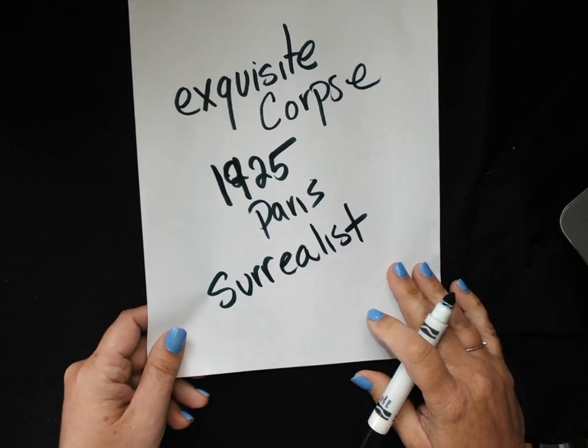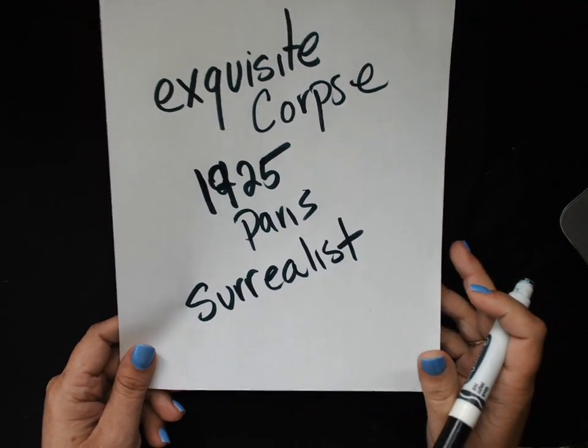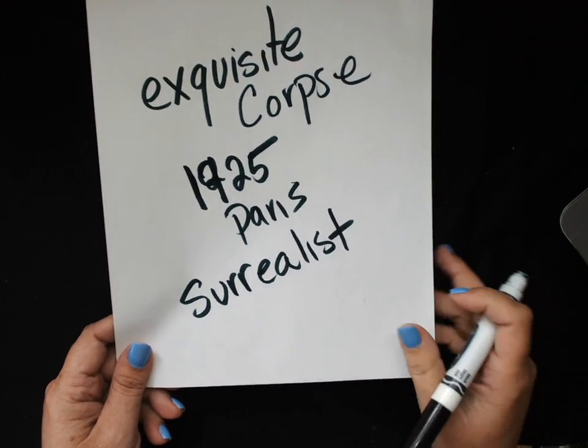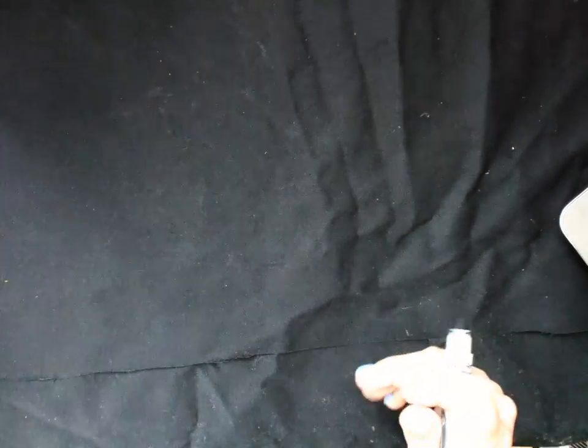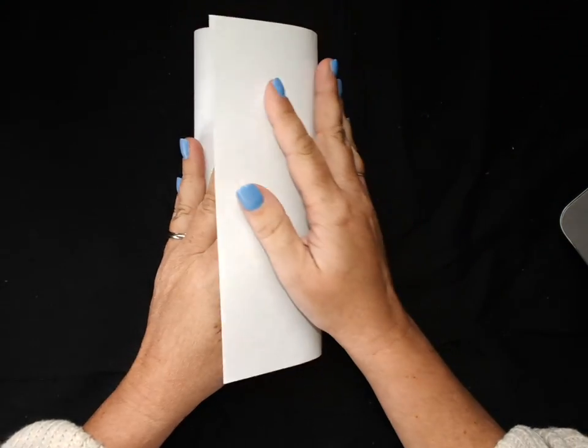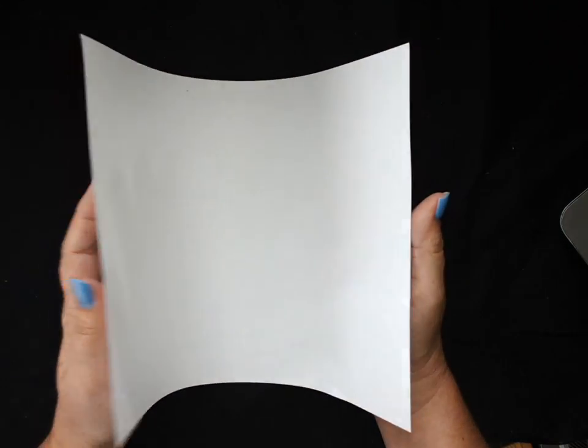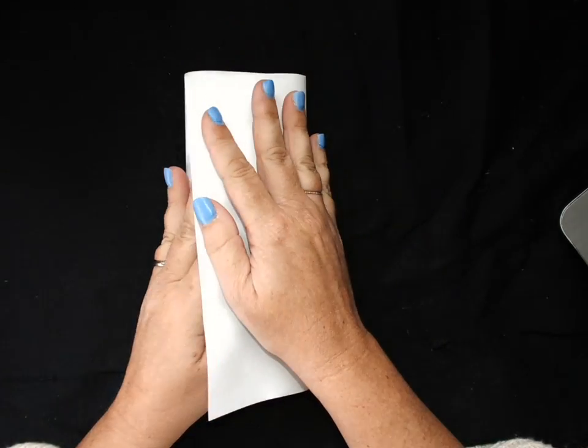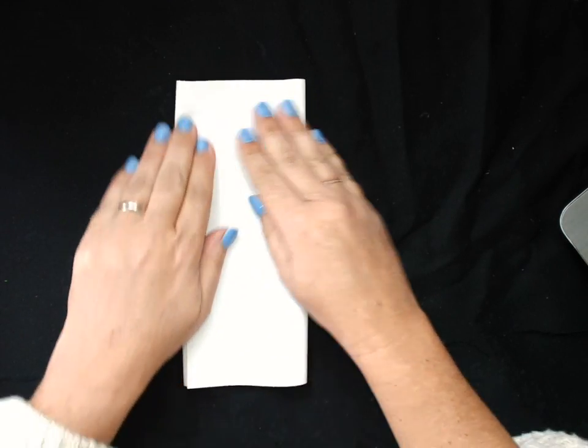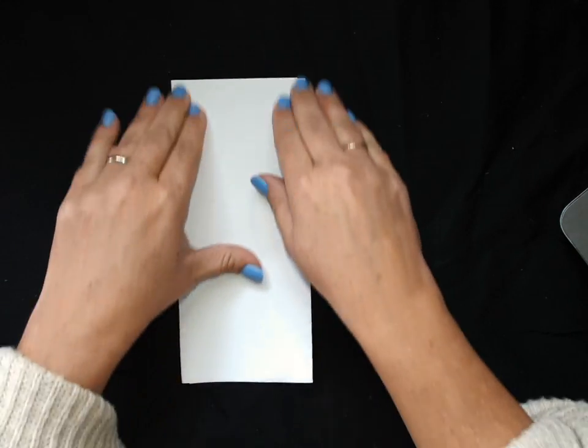A bunch of friends got together and they all did the same style of artwork called Surrealism. So what we're going to do is get a piece of paper and fold that paper in thirds. So that means you're going to fold it in three parts, like you're putting it in an envelope if you've ever done that.